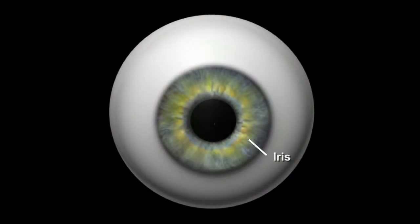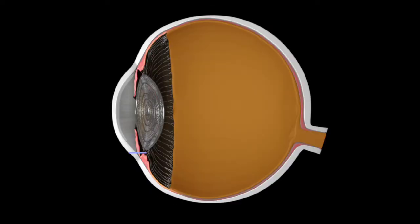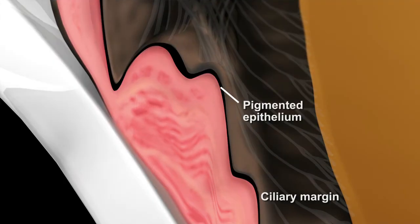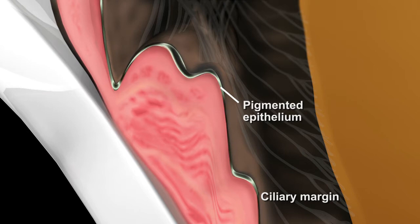These retinal stem cells are located within the dark ring around the iris in the pigmented epithelium near the ciliary margin. Of these cells, about 1 in 500 are actual stem cells.